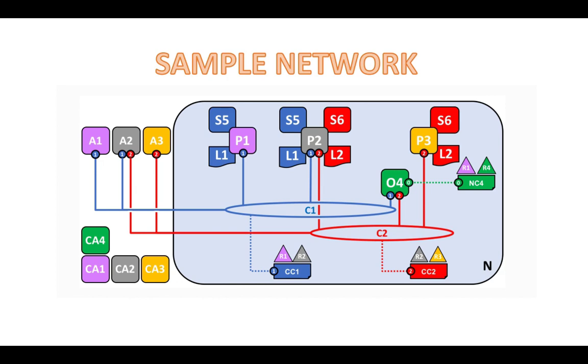There are peer nodes. If you can see, peer node P1 maintains a copy of ledger L1 and a smart contract S5 associated with channel C1. Peer node P2 maintains a copy of ledger associated with channel C1 and a copy of ledger L2 associated with channel C2. It also has two smart contracts, smart contract S5 and smart contract S6. Peer node P3 maintains the copy of ledger L2 which is associated with channel C2.